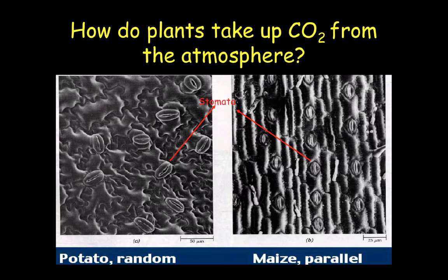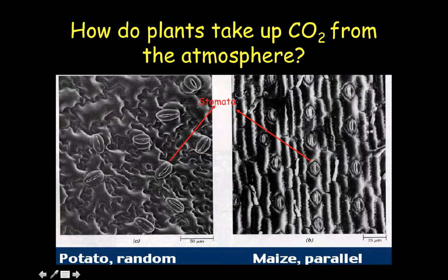Stomata can come in many shapes and sizes depending on the plant. For potatoes, you can see stomata randomly placed everywhere. However, with corn — which is similar to our grasses in terms of leaf structure and parallel veins — the stomatas are very organized and actually occur in a parallel fashion.